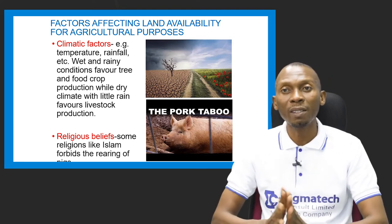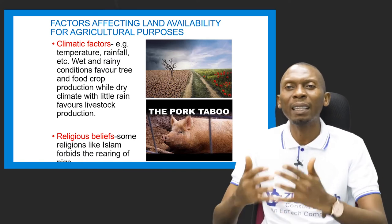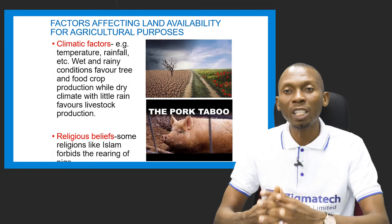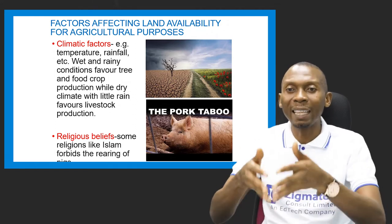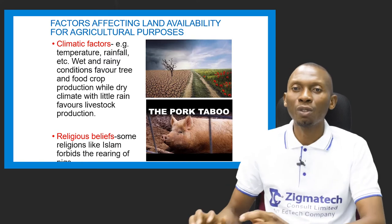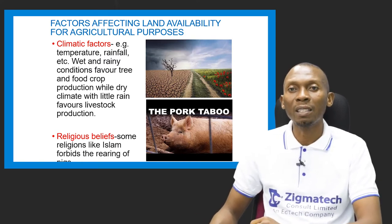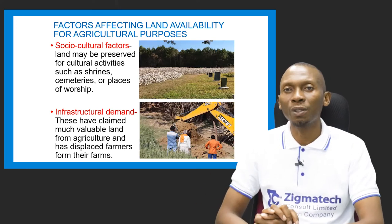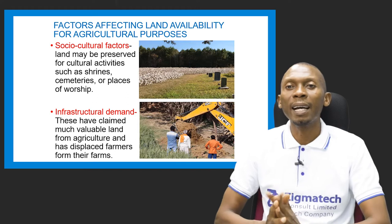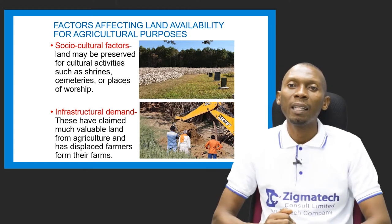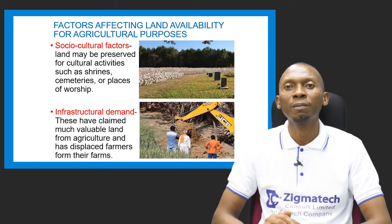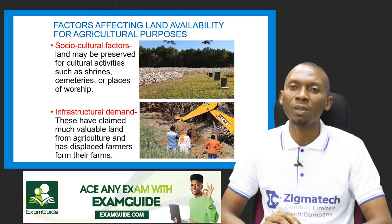Religious belief is another factor — some religions like Islam forbid the rearing of pigs, affecting whether land can be used for pig pens and pig production. Social-cultural factors also affect land availability, as certain lands are preserved for cultural activities like the location of shrines, cemeteries, or places of worship.